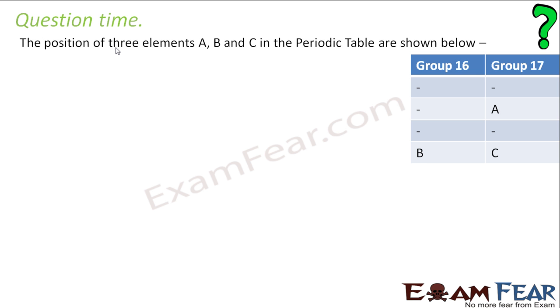The position of three elements A, B, C in the periodic table are given below. They are in group 16, group 17. State whether A is a metal or non-metal. You can see that group 17 are all on the non-metal side. So A is a non-metal. That is confirmed. A is non-metal.